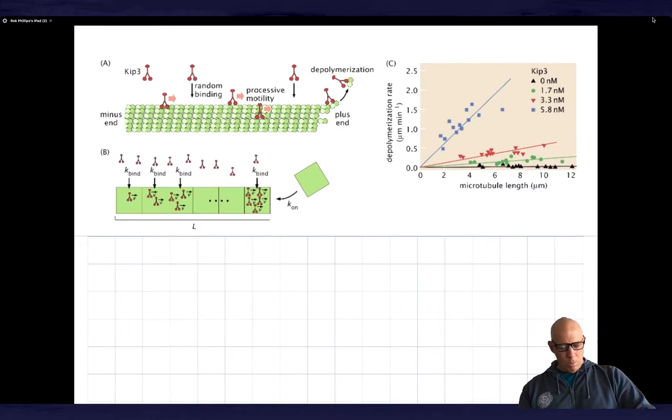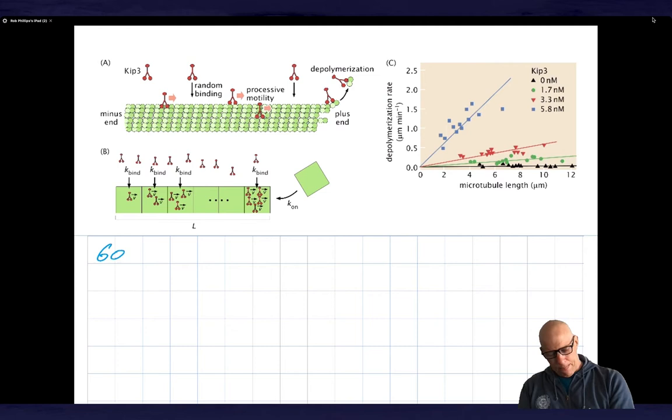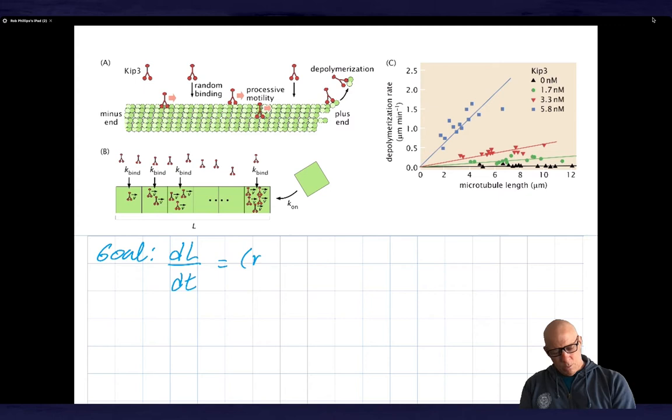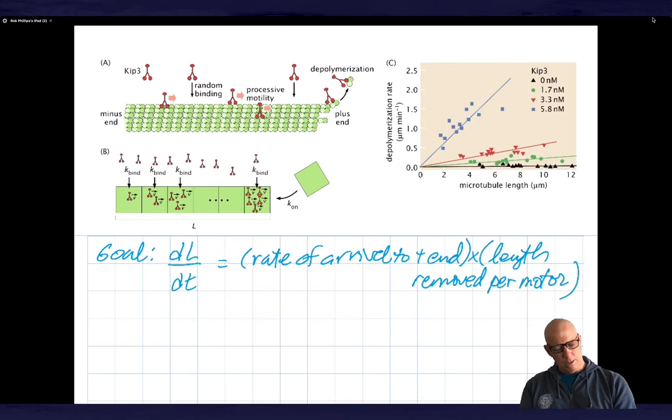So what we're going to do is we're going to try to write down. So our goal is I want to figure out what dL by dt is. We want to figure out what's the rate of change of length. And specifically, this is going to be equal to the rate of arrival to plus end times the length removed per motor times the density at the end. So something like that. And I'll be more precise about that later.